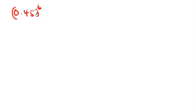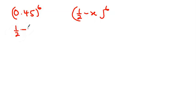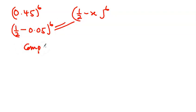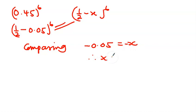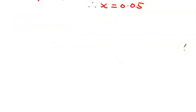For the last part, we need to find 0.45 to the power 6. The key is to rewrite 0.45 so we can compare it with our general expansion (1/2 - x)^6. We can write 0.45 as 1/2 minus 0.05, so (0.45)^6 equals (1/2 - 0.05)^6. Comparing with the expansion, minus x equals minus 0.05, so x equals 0.05.